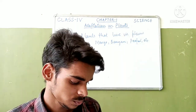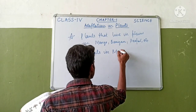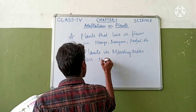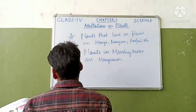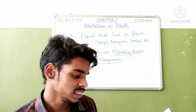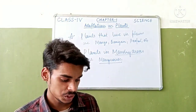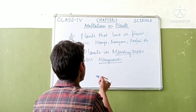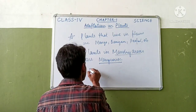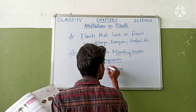Plants in marshy areas are called mangroves. In marshy areas the soil is sticky and clayey. The plants growing in such soil are called mangrove trees. Examples are Avicennia and Rhizophora.